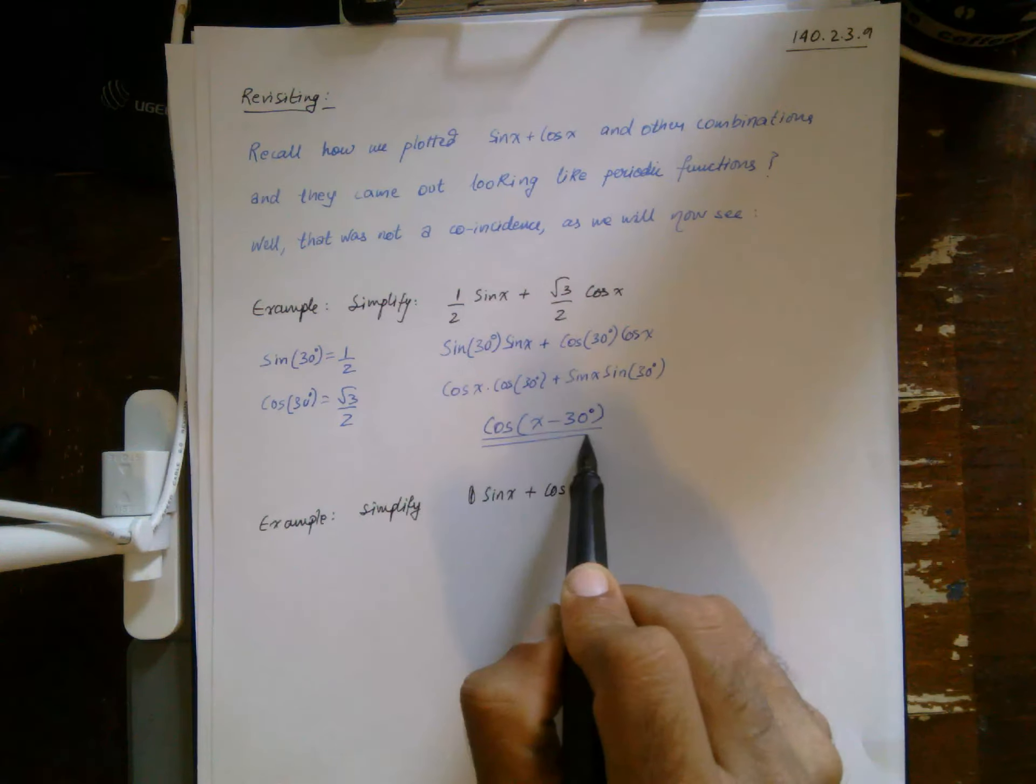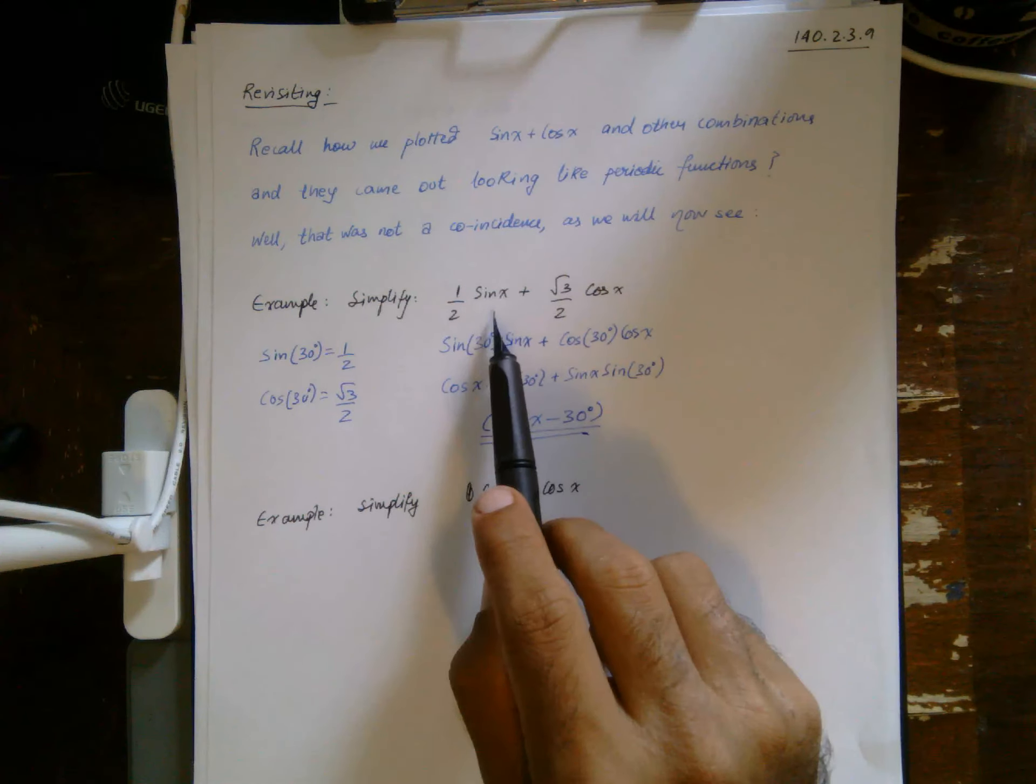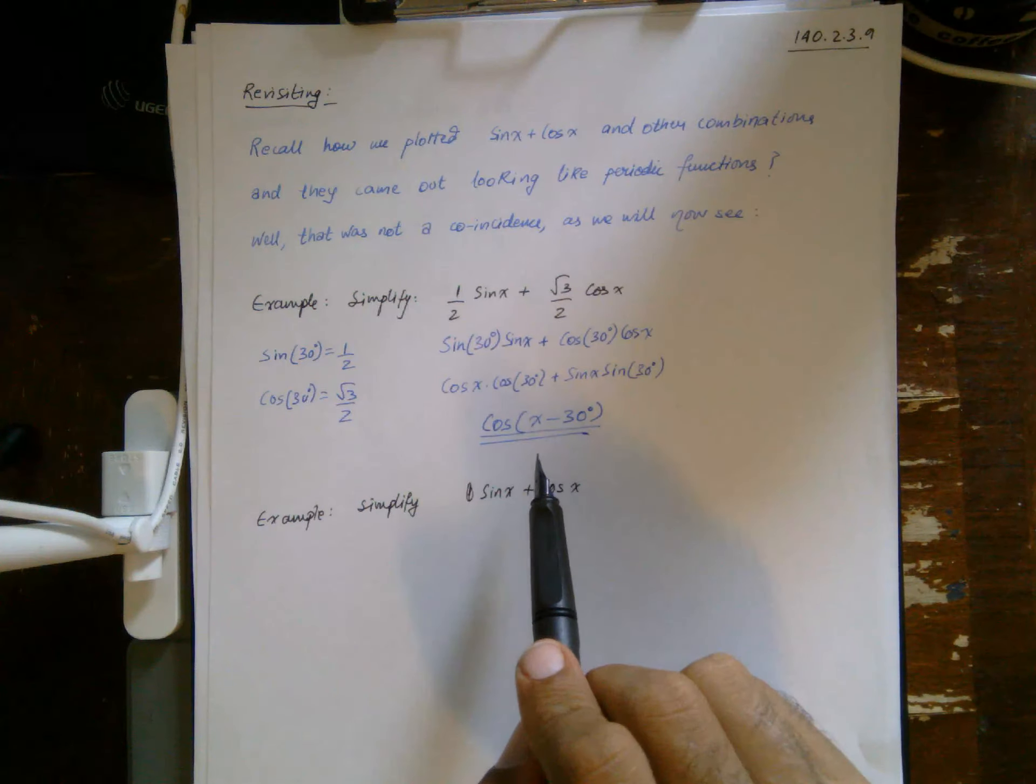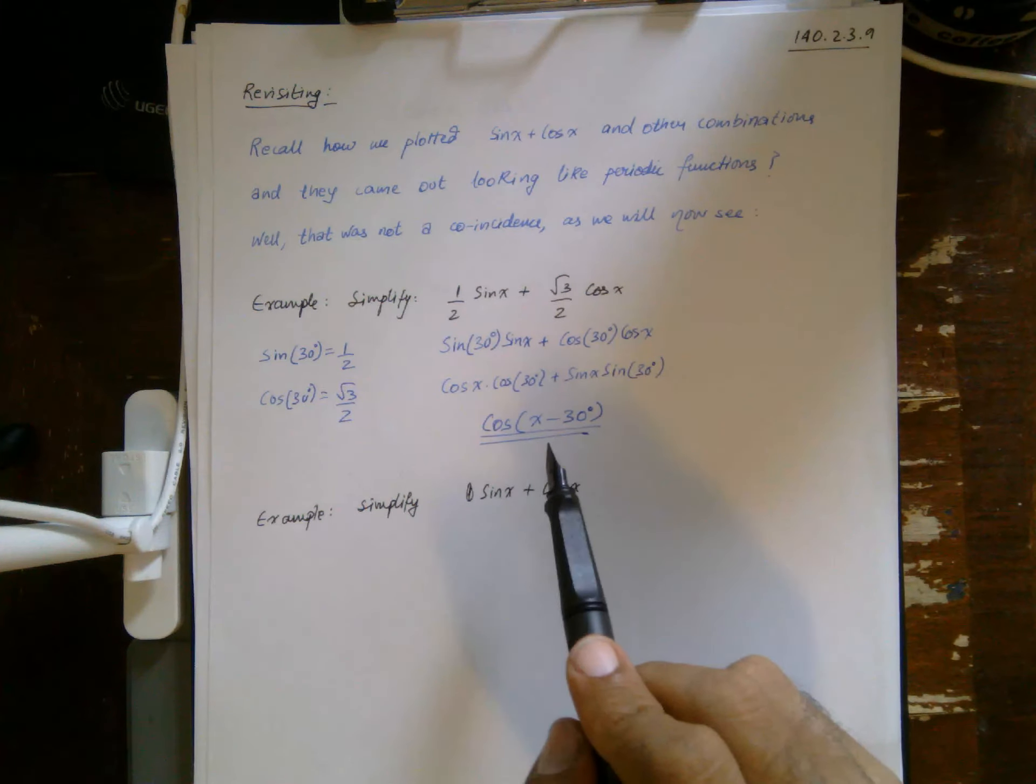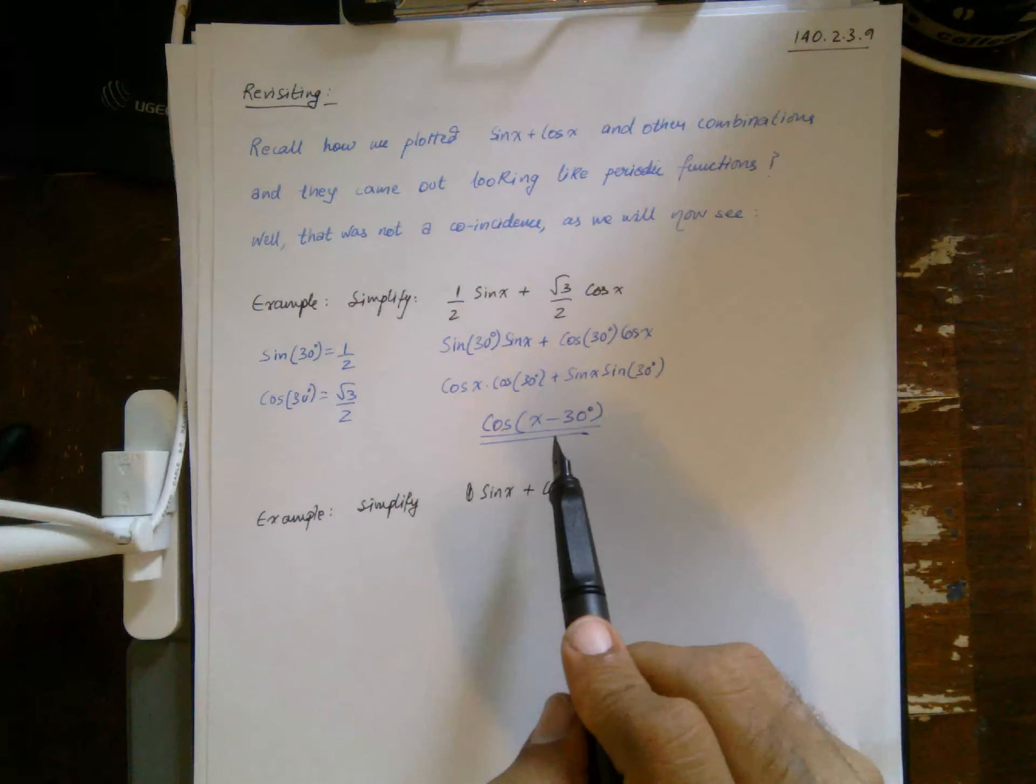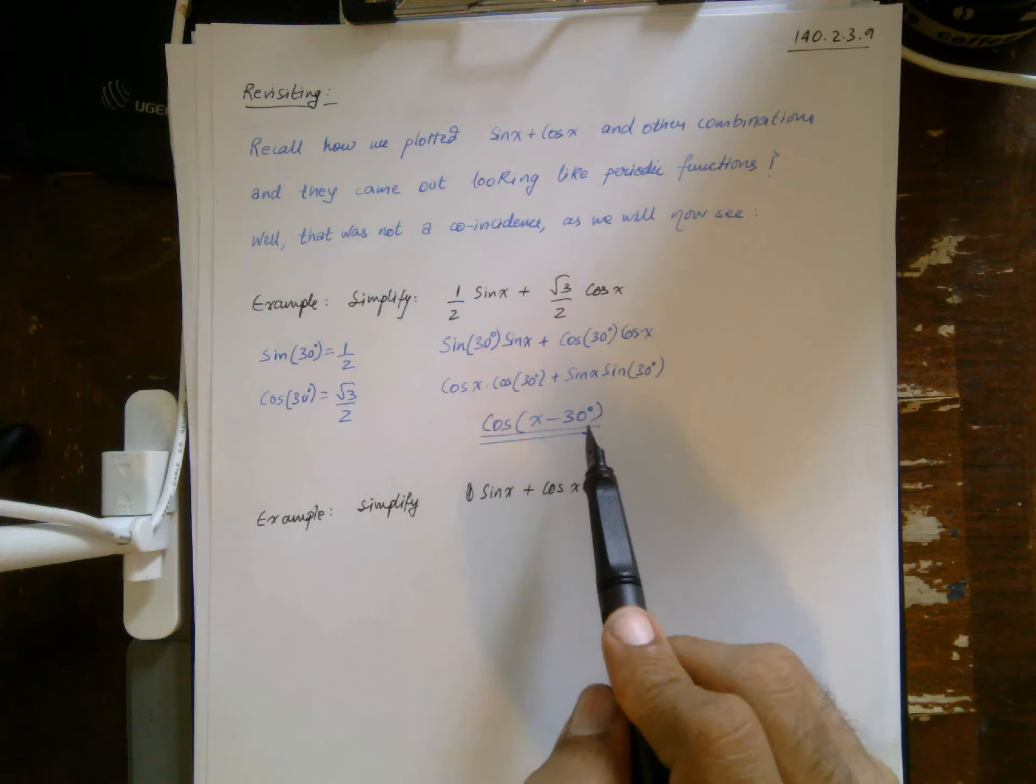And the identity is cosine of x minus 30 degrees. Which means if you were to plot this on Desmos, it would actually come out to look like a cosine or a sine curve. And that makes sense, because it's actually just this: it's a cosine of x shifted by 30 degrees.